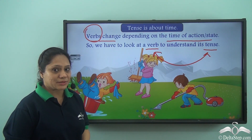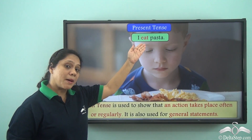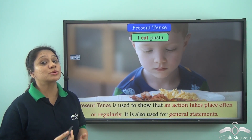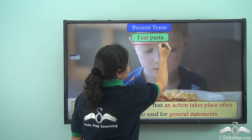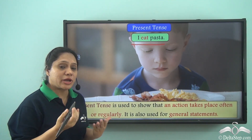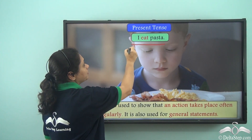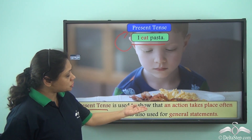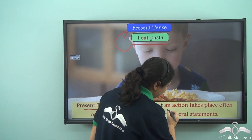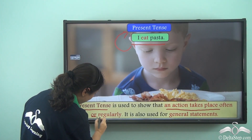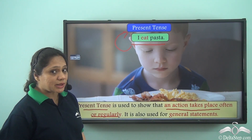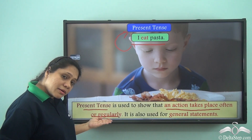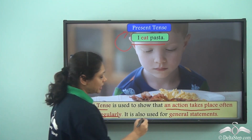Now let us read some examples. 'I eat pasta.' You generally eat pasta — you regularly eat pasta. Sentences like this, which show us things that are done in general or regularly, are in present tense. So present tense is used to show that an action takes place often or regularly. It is also used for general statements.